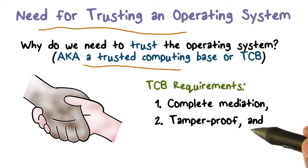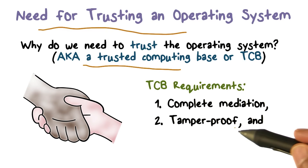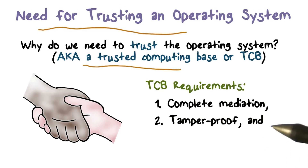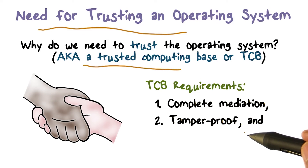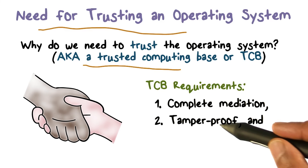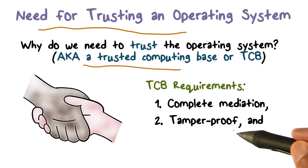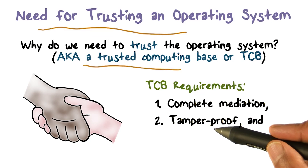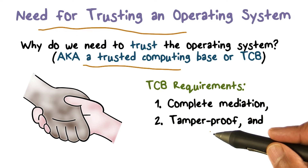The second requirement a trusted computing base has to meet is that it has to be tamper-proof. We're going to spend time on how to achieve that. The reason it has to be tamper-proof is that we're talking about untrusted code alongside the trusted operating system. If untrusted code can tamper with the trusted OS, you can't trust it anymore. The untrusted code could change it to do whatever it wants — in particular, gain access to resources not meant for that application.